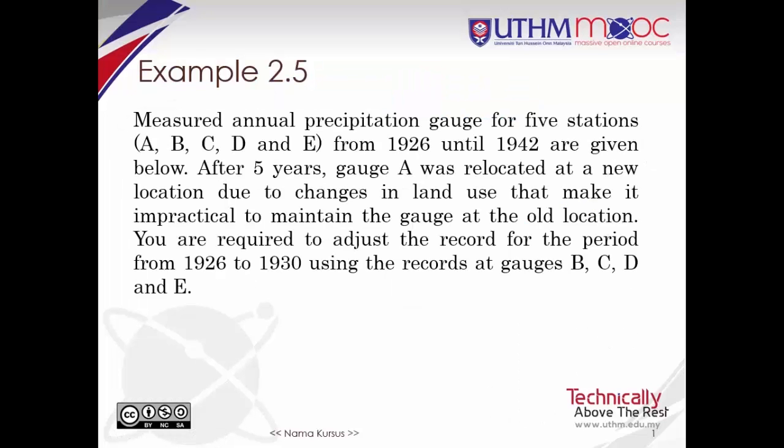You can try to solve example 2.5 using double mass curve analysis. The measured annual precipitation gauge for five stations A, B, C, D and E from 1926 until 1942 are given below. After five years, gauge A was relocated at a new location due to changes in land use that make it impractical to maintain the gauge at the old location. You are required to adjust the record for the period from 1926 to 1930 using the records at gauges B, C, D and E.